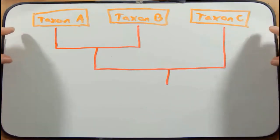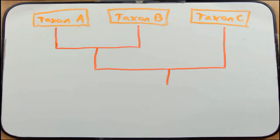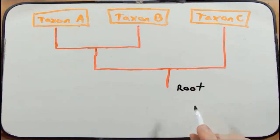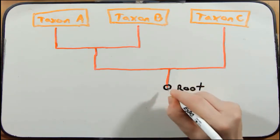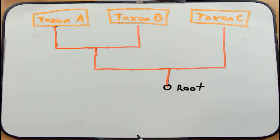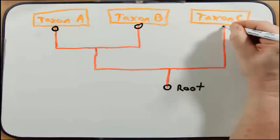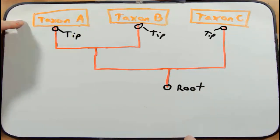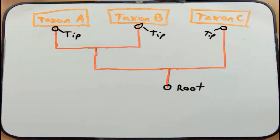I'm going to use this general cladogram to point out some important features — some we've talked about before, and some will be new. The first term is the root. The root is the common ancestor of the species in the tree, representing a common ancestor for all the different taxa. The next term is the tip. We have a tip here, a tip here, and a tip here. The tip represents the descendant taxon — the taxon that has descended from this common ancestor. Often these tips represent species, but we're using the general term taxon for right now.